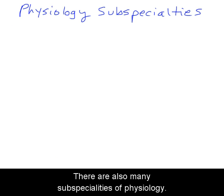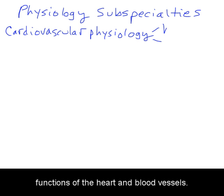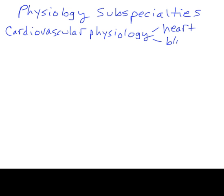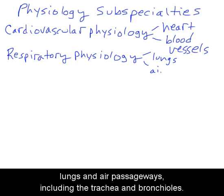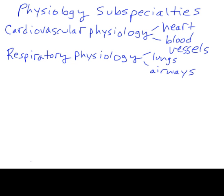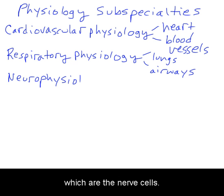There are also many subspecialties of physiology. Some examples include cardiovascular physiology, which is the study of the functions of the heart and blood vessels. Respiratory physiology is the study of the lungs and air passageways, including the trachea and bronchioles. Neurophysiology is the study of the functions of neurons, which are the nerve cells.